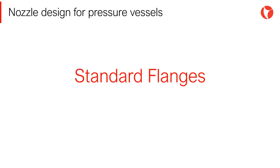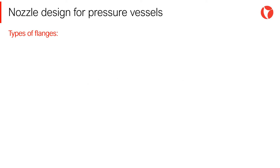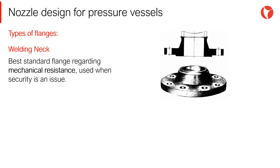Section 8, Division 1 states that standard flanges to be used for pressure vessels designed according to the ASME code should be ANSI-ASME type. Some of the most used flanges in pressure vessels include the welding neck flange, welded to the pipe — the best standard flange regarding mechanical resistance, used when security is an issue.